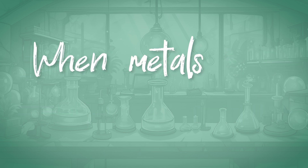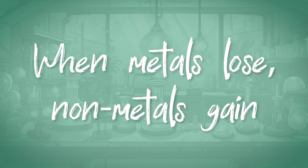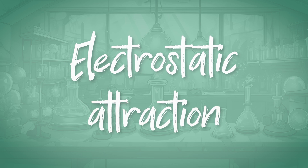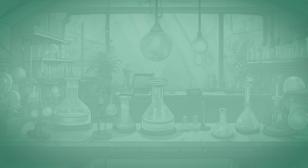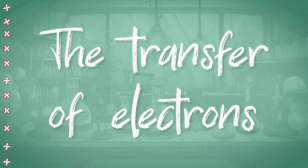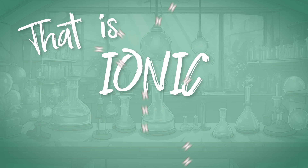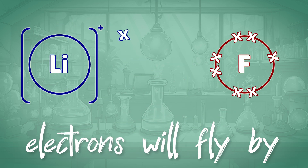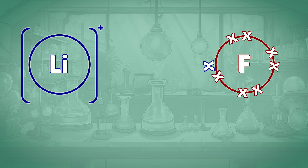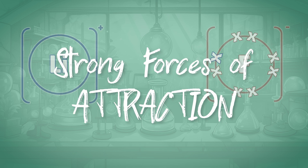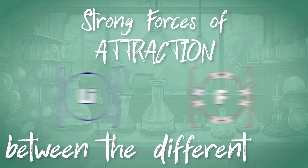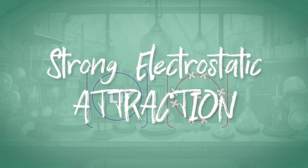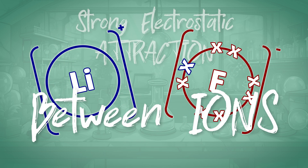Ionic bonding is the transfer of electrons — what metals lose, non-metals gain. Ionic bonding is the strong force of attraction, electrostatic attraction between ions. The transfer of electrons, that is ionic bonding — from metal to non-metal, electrons will fly by. Strong forces of attraction between the different ions — strong electrostatic attraction between ions.